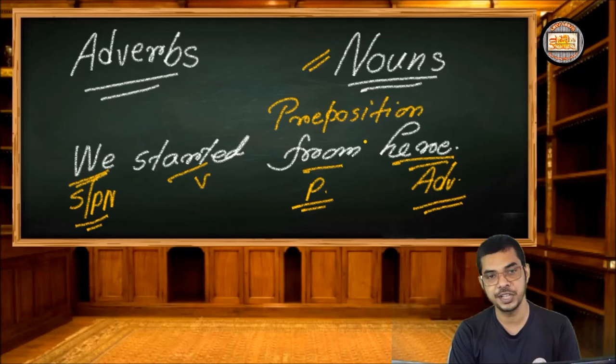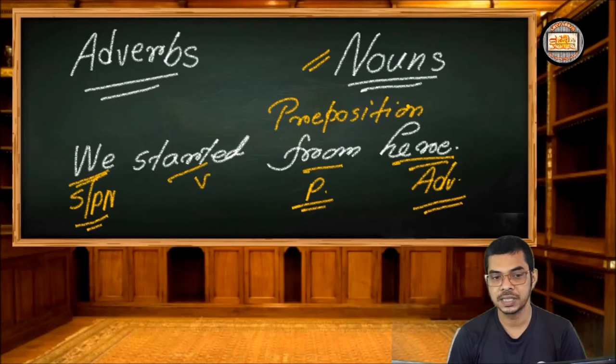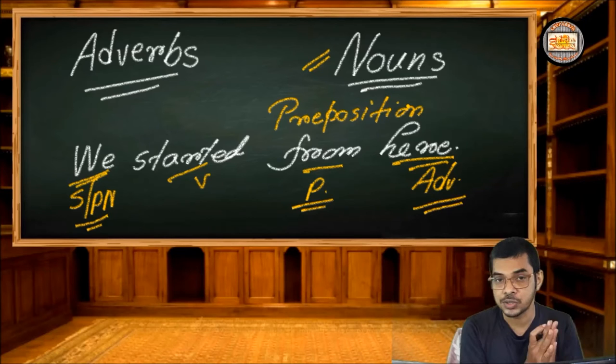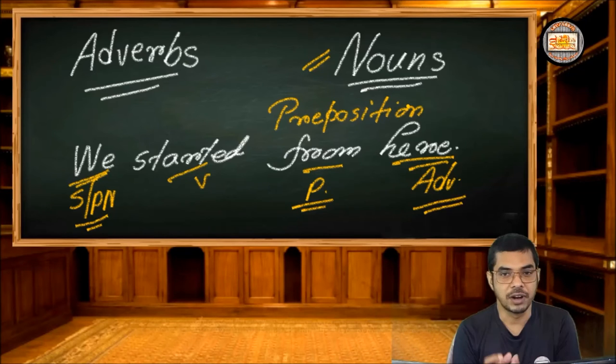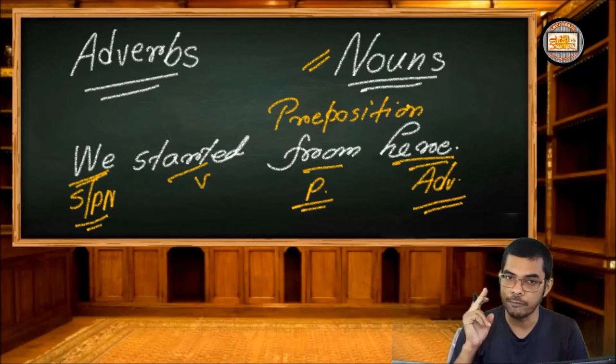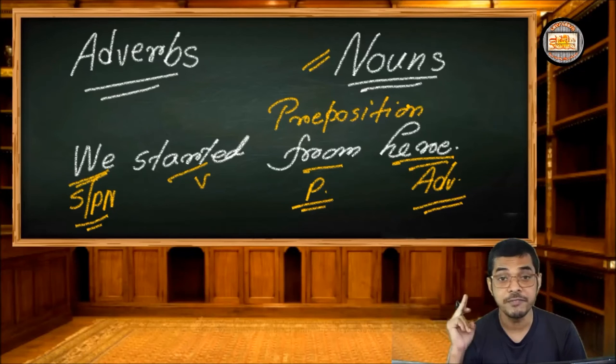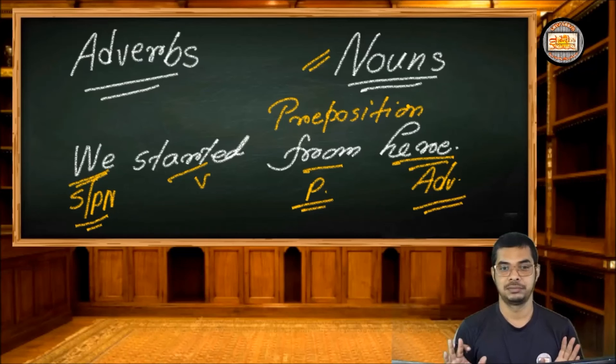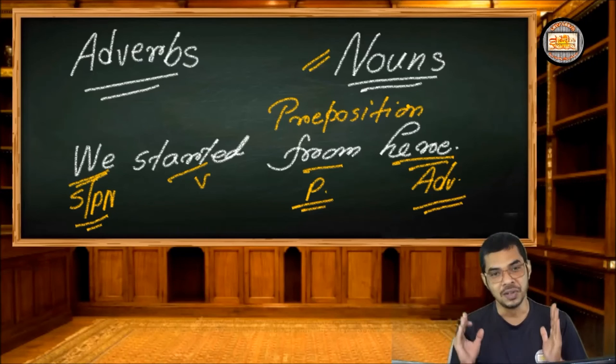A preposition attaches a noun with the rest of the sentence. Without this preposition, the noun gets loose. It cannot get attached to the sentence. So whenever we have used a preposition, obviously the preposition would be followed by a noun. A noun. Only a noun can follow a preposition.